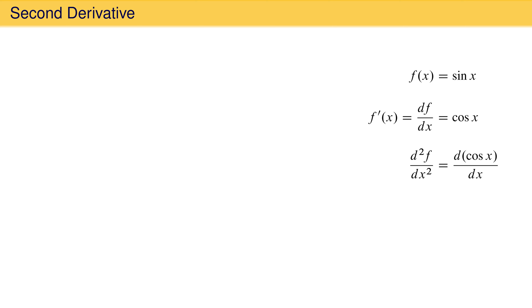The symbol for this is d²f/dx², which is read as the second derivative of f with respect to x. It means take the derivative of the original function and then take the derivative of the derivative. More compactly, the second derivative can be symbolized as f double prime of x. So let's try this.